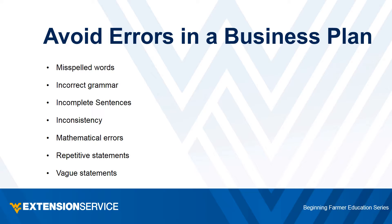Perhaps worst of all is putting in the time and resources into making a detailed, complete plan and then not implementing it. A careful proofread by an objective party can help avoid errors in a business plan, such as misspelled words, incorrect grammar, incomplete sentences, inconsistency, mathematical errors, or repetitive and vague statements.